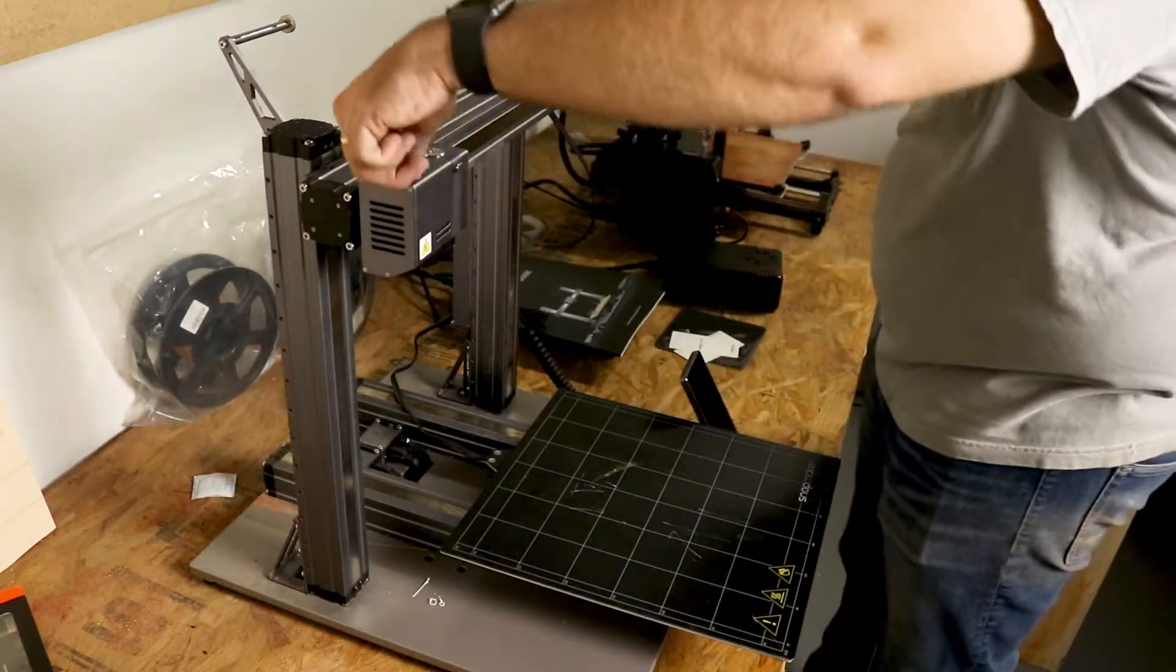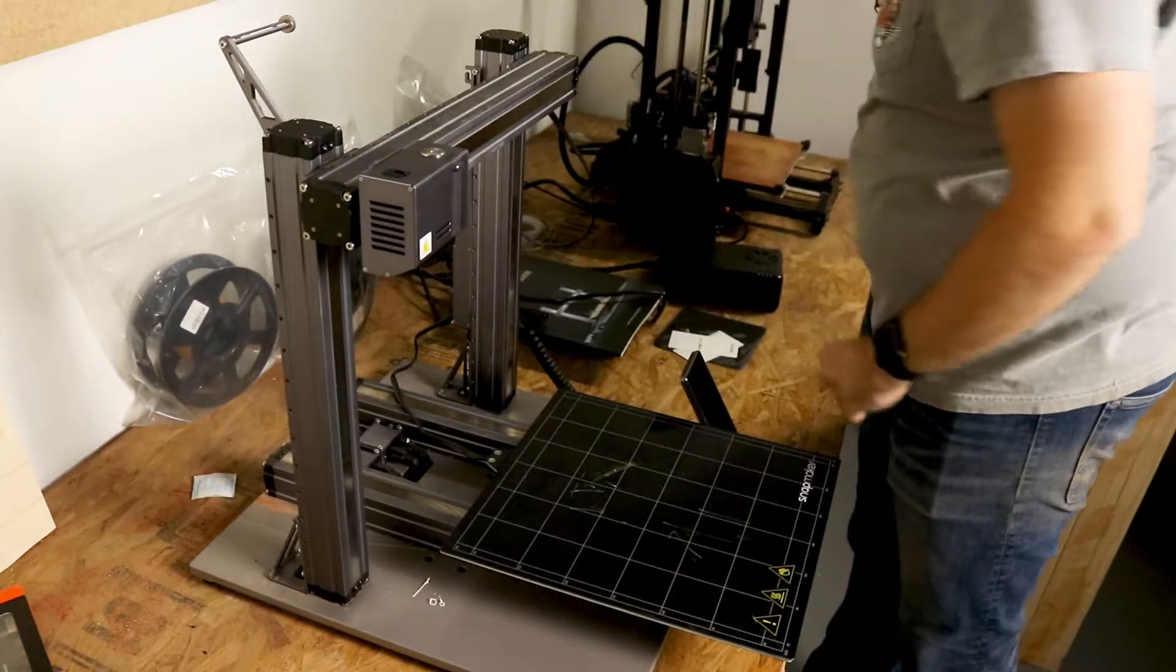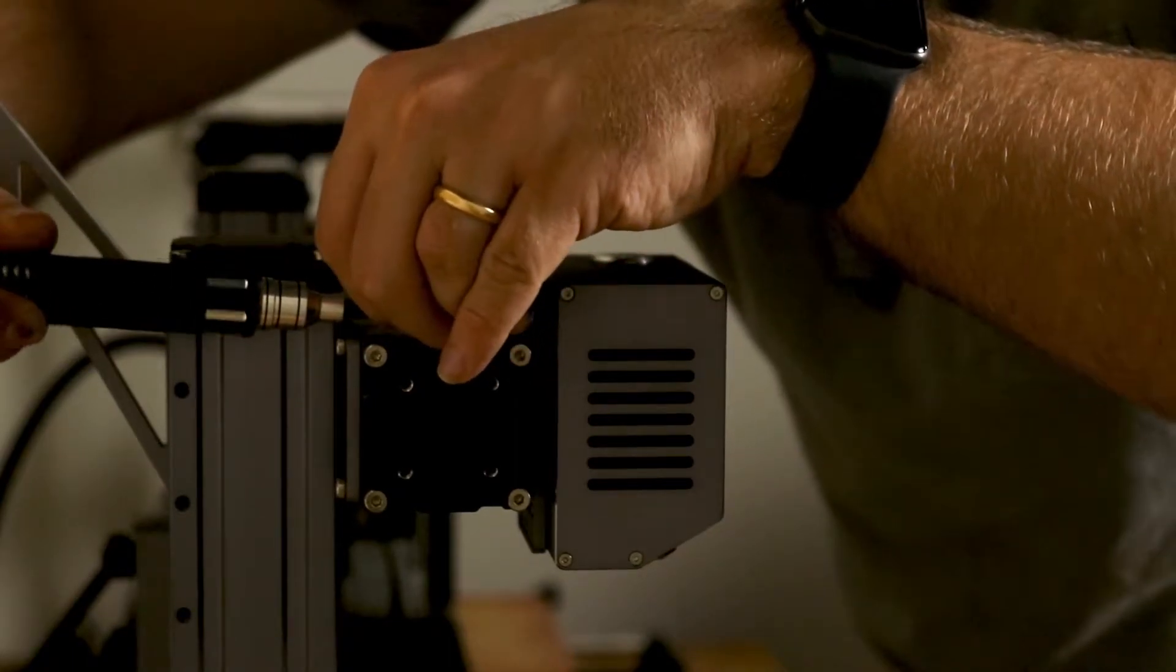Once the filament is out and correctly unloaded, we want to disconnect the head. Both the head and the bed for the 3D printer have cable connections into the brain of the unit because they both have temperature sensors and heating elements that are controlled through the brain of the unit. So we're going to disconnect both of those and we're going to take off the two screws that hold the head in place.